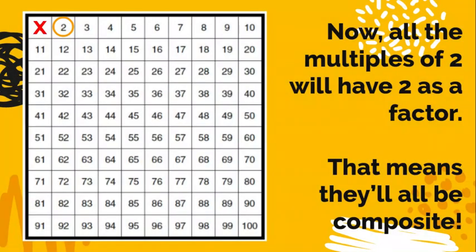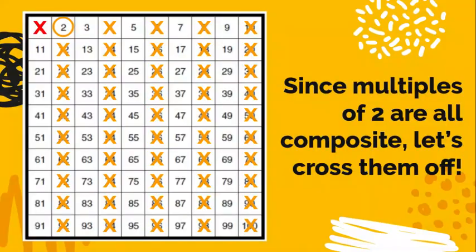Now here's where we get to get fancy. All the multiples of 2 have 2 as a factor. So think about some of the multiples of 2, like 4 or 6. All of those numbers are going to have 2 as a factor. So that means they're all going to be composite. None of them are going to be prime.